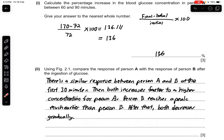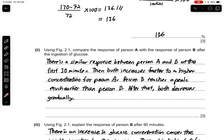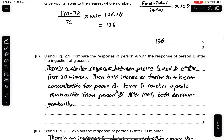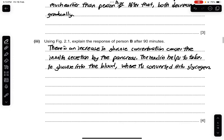Part 2: compare the response of Person A with Person B after ingestion of glucose using Figure 2.1. There is a similar response between Person A and B in the first 30 minutes. Both increase, but Person A rises to a higher concentration. Person A will reach the peak much later than Person B. After that, both will decrease gradually. Part 3: explain the response of Person B after 90 minutes.